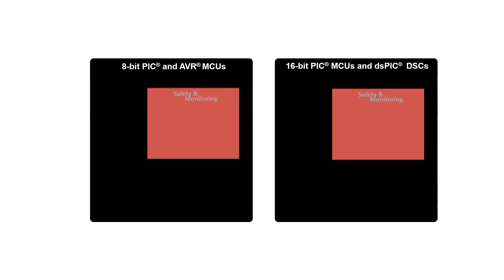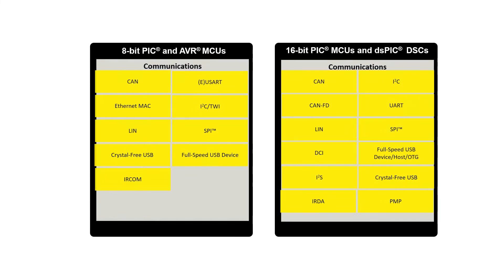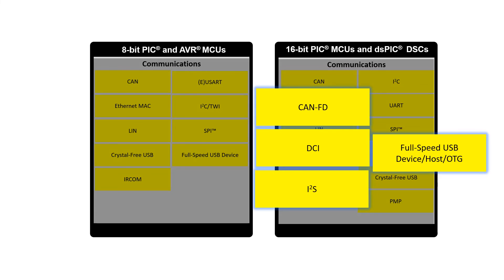Standard communication peripherals are integrated on many 8 and 16-bit devices including I2C, SPI, USART, CAN-LIN, full-speed USB device, and more. Designers requiring integrated inter-IC sound, CAN-FD, DCI, or full-speed USB on-the-go will want to take a look at Microchip's 16-bit products.